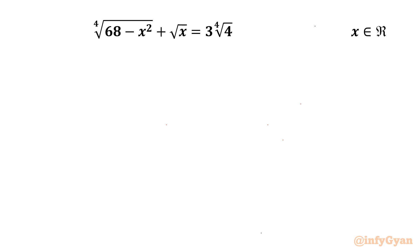Welcome back to Infigyan, my dear friends. In today's video we are having one very interesting question from Radical Equations. The equation is: 4th root of (68 minus x squared) plus square root of x, equal to 3 times 4th root of 4. We have to find out all real solutions. So let's get started.